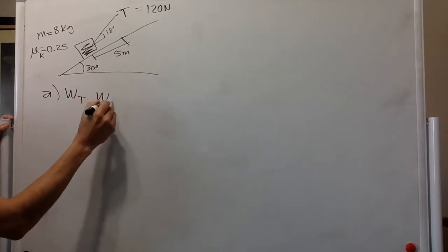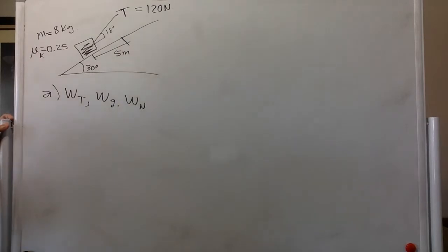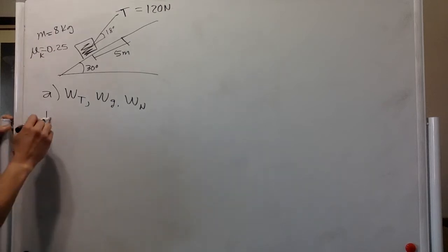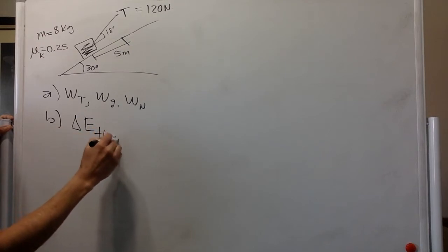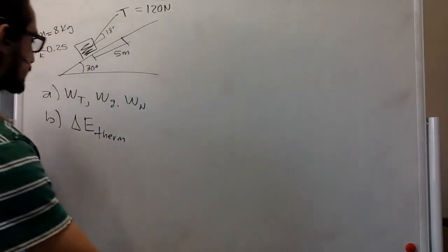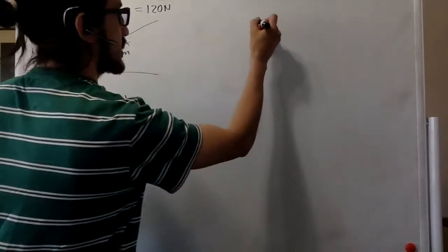Tension, gravity, normal force. What is the increase in thermal energy of the crate and incline? That's part B. The change in thermal energy. So first things first, we draw our free body diagram.